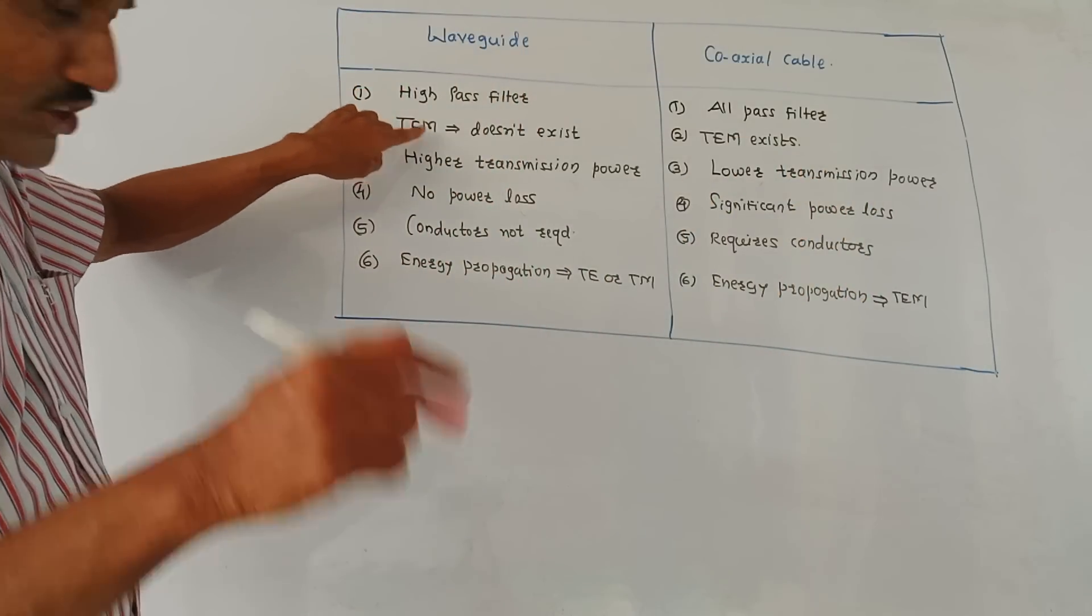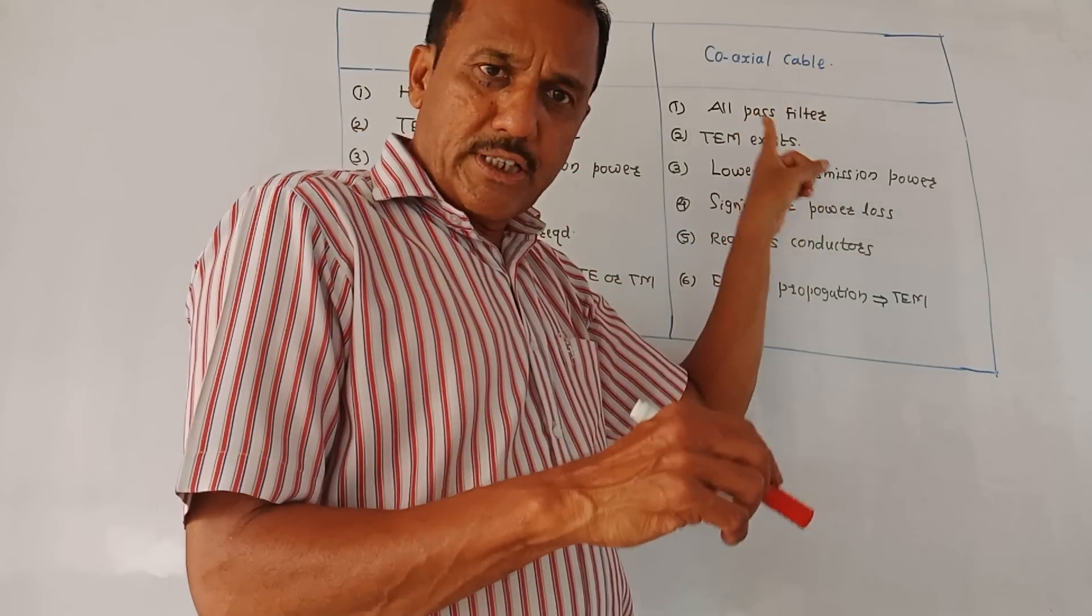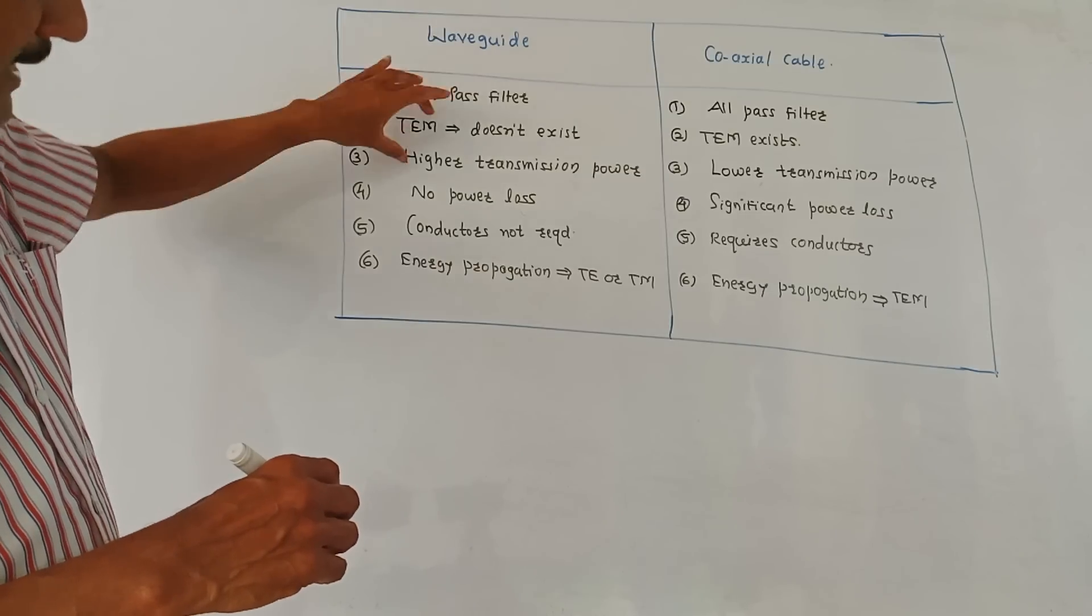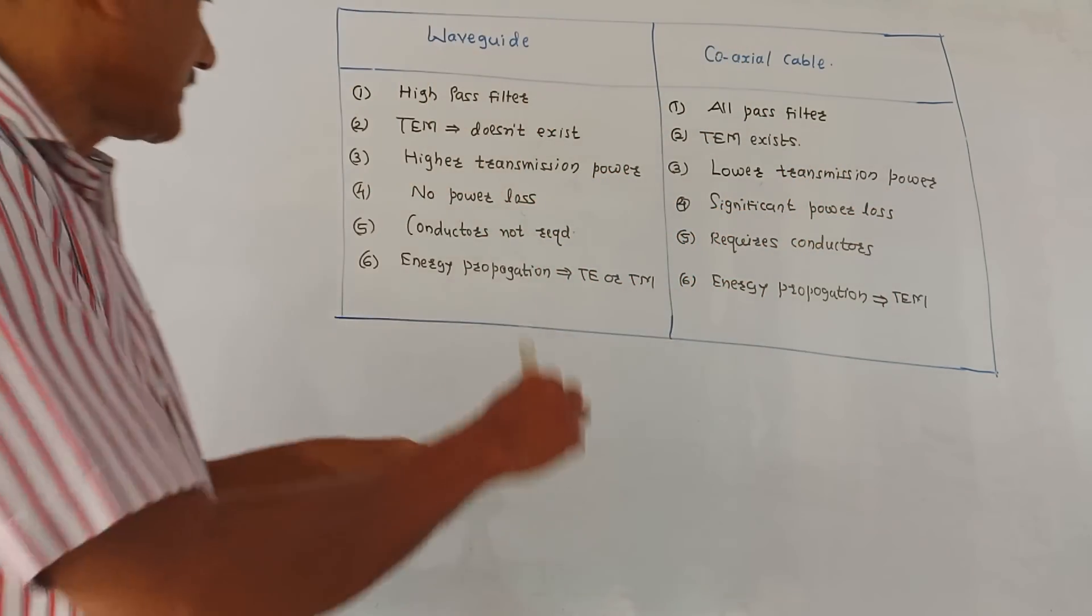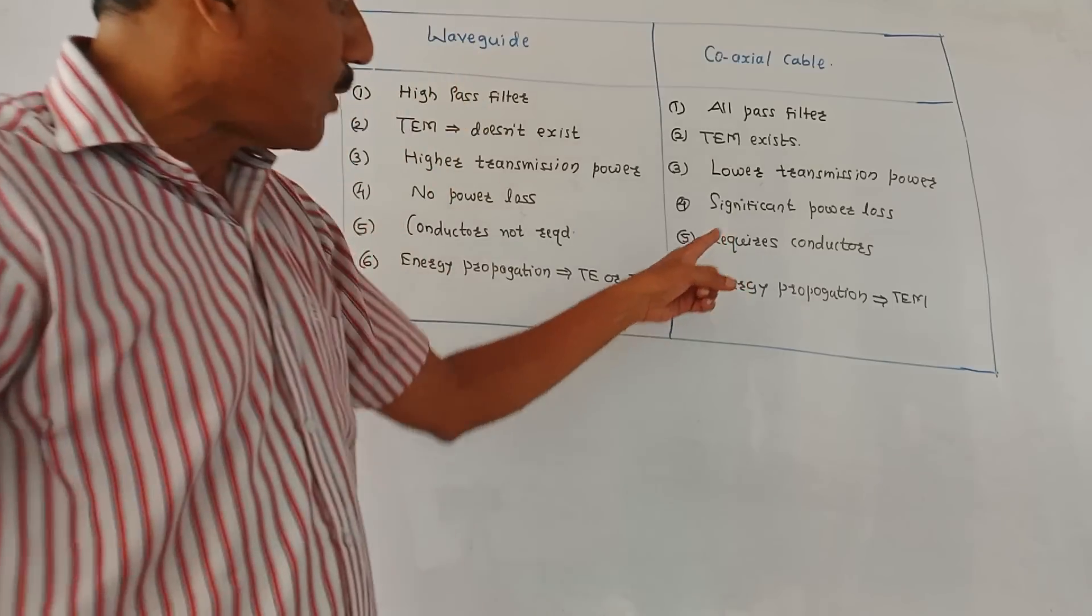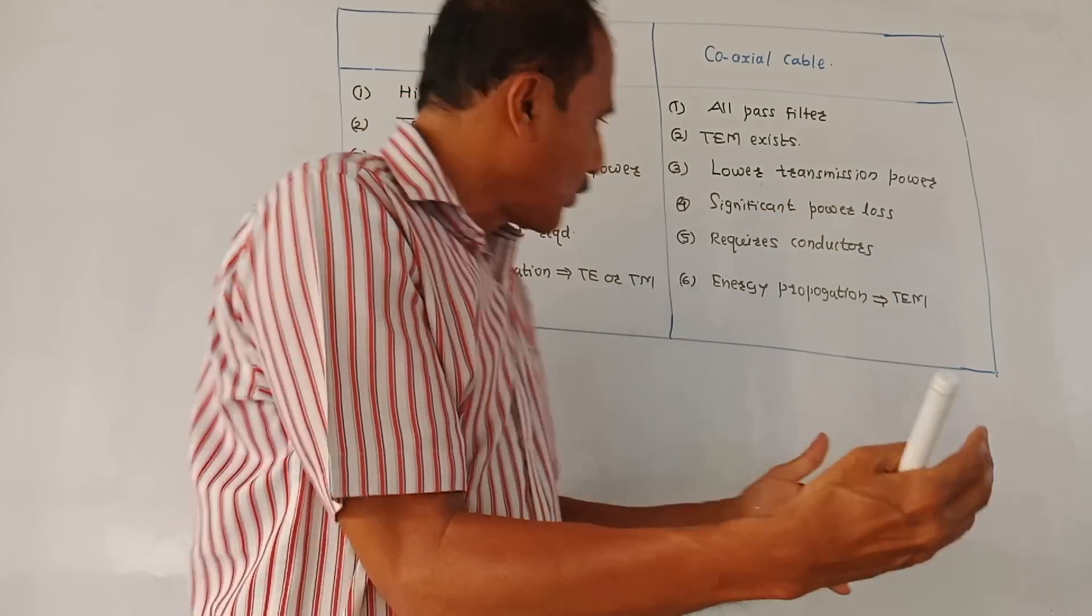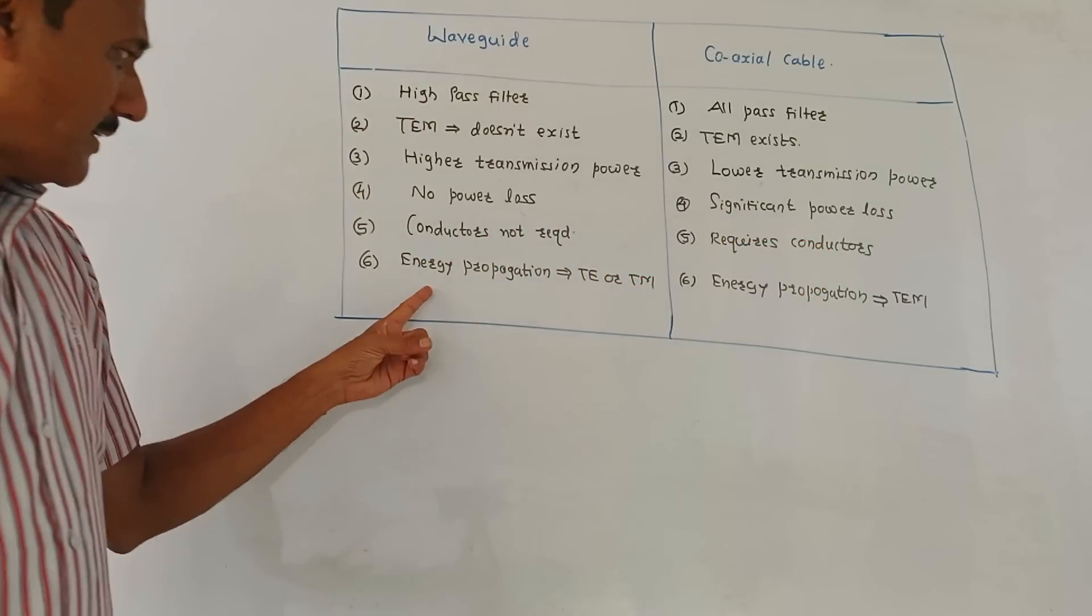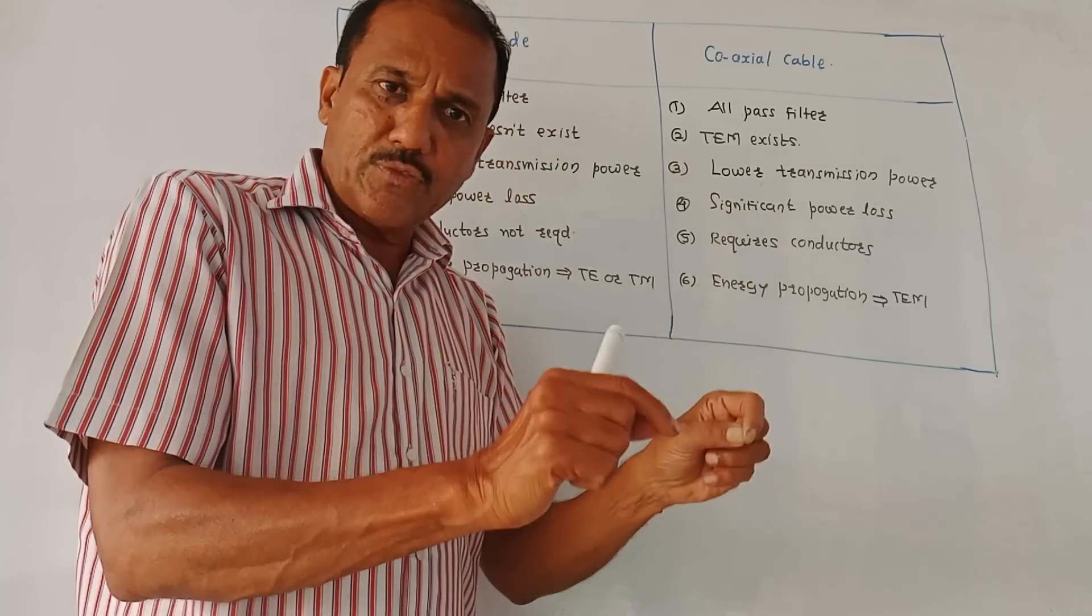The TEM, that is transverse electromagnetic mode, does not exist in case of waveguide, whereas in case of coaxial cable, transverse electromagnetic, that is TEM mode exists. Third point is, these waveguides are applicable for higher transmission powers, whereas coaxial cables are mainly used for lower transmission powers. Ideally, there is no power loss in case of waveguide, whereas in case of coaxial cables, there is a significant amount of power loss. Then, waveguide does not require any conductors because it is basically a hollow metallic tube, whereas as I said, a copper conductor is usually used in case of coaxial cable, so it requires conductors.